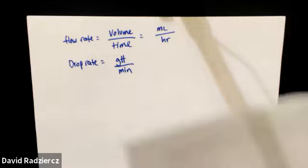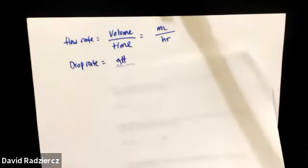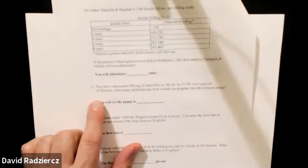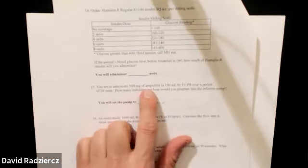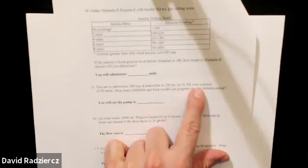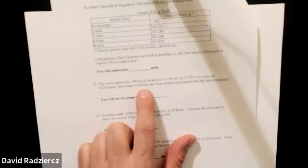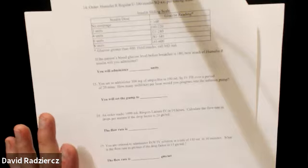If it didn't tell you milliliters per hour, how would you know that? Looking at question 15: it says administer 500 milligrams ampicillin in 100 milliliters by IV piggyback over 20 minutes — how many milliliters per hour would you program into an infusion pump? It even tells you in the question: milliliters per hour.